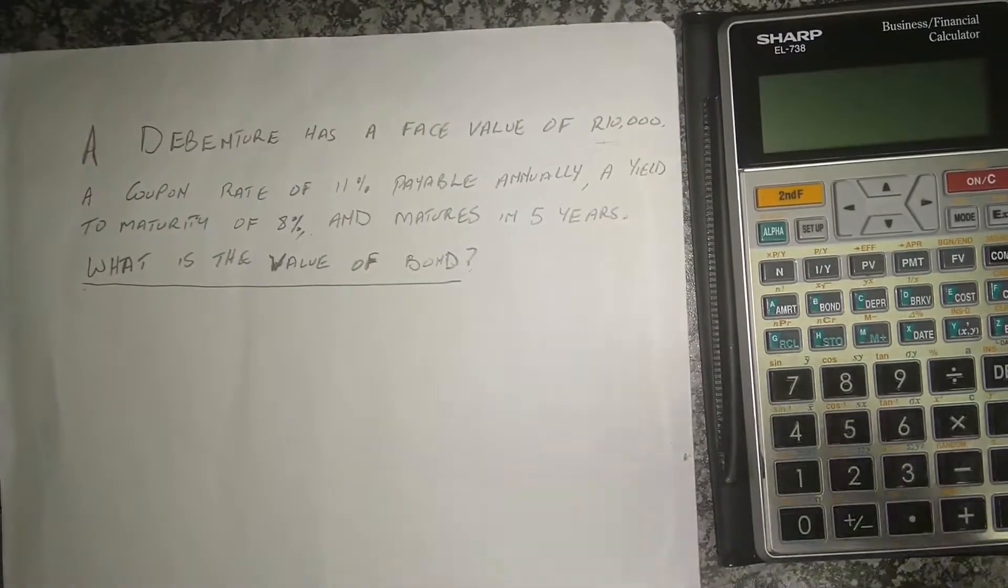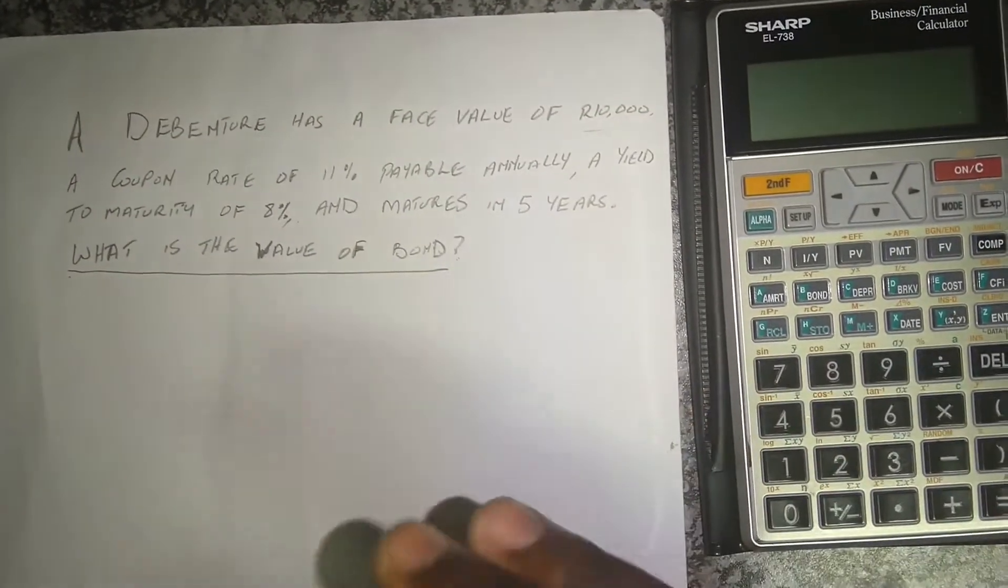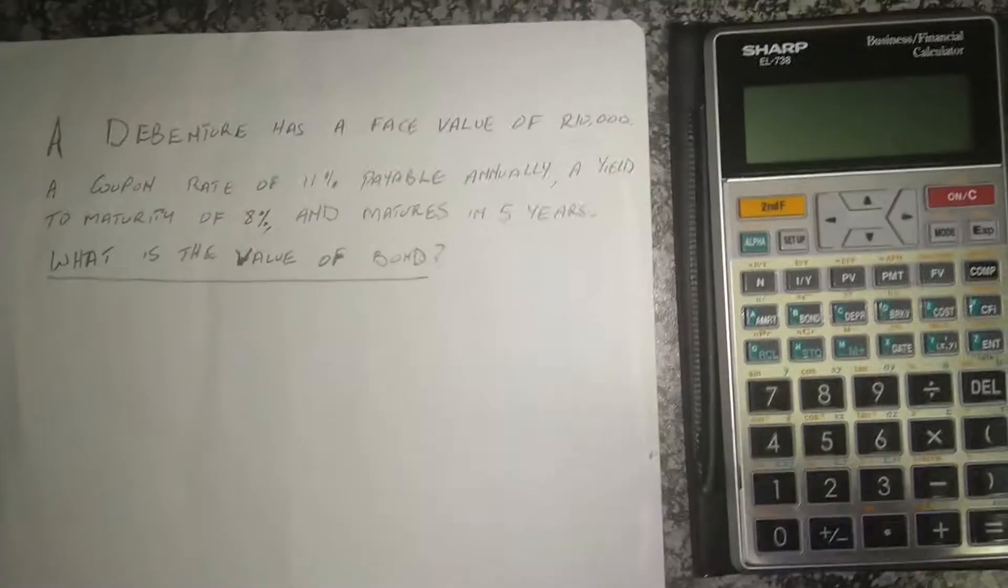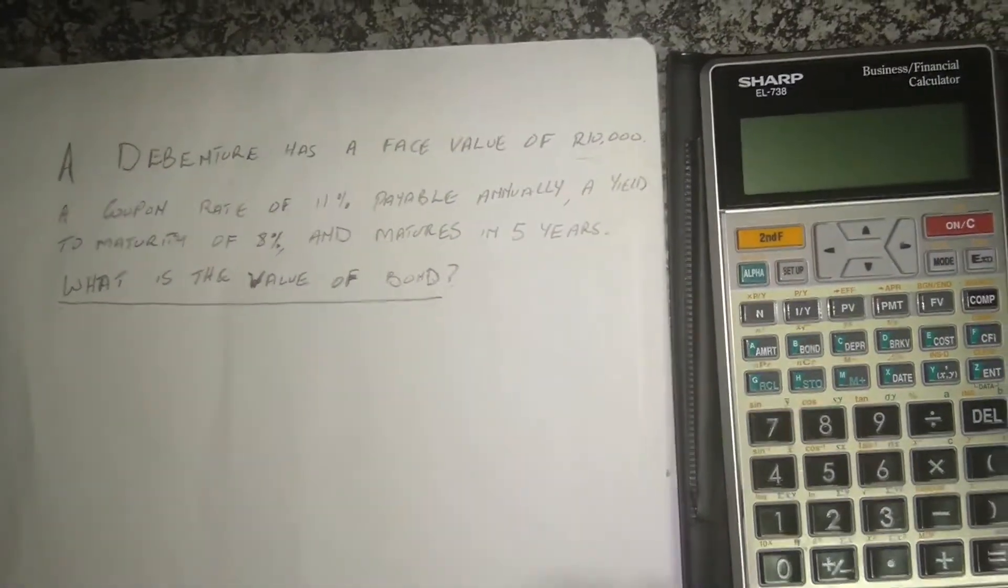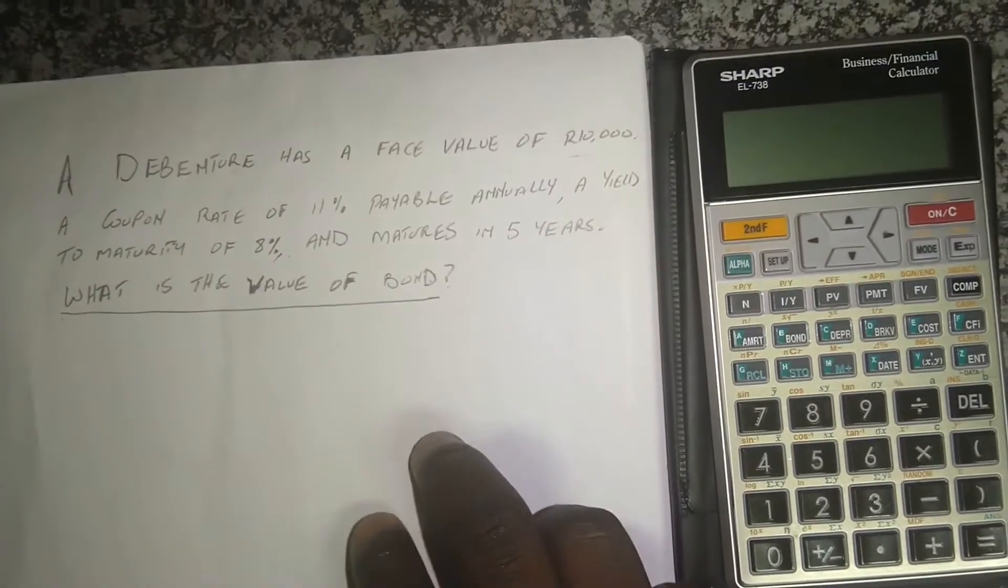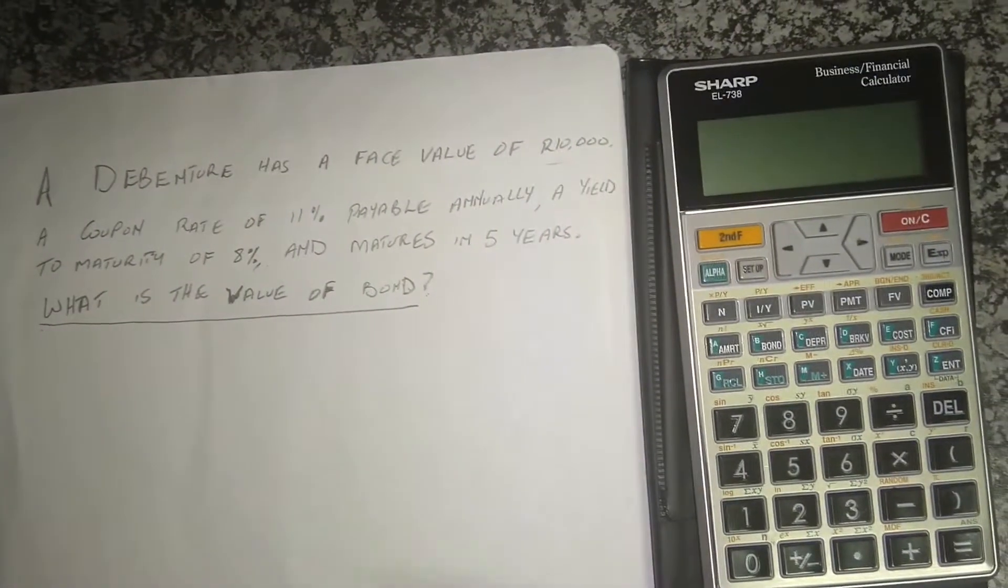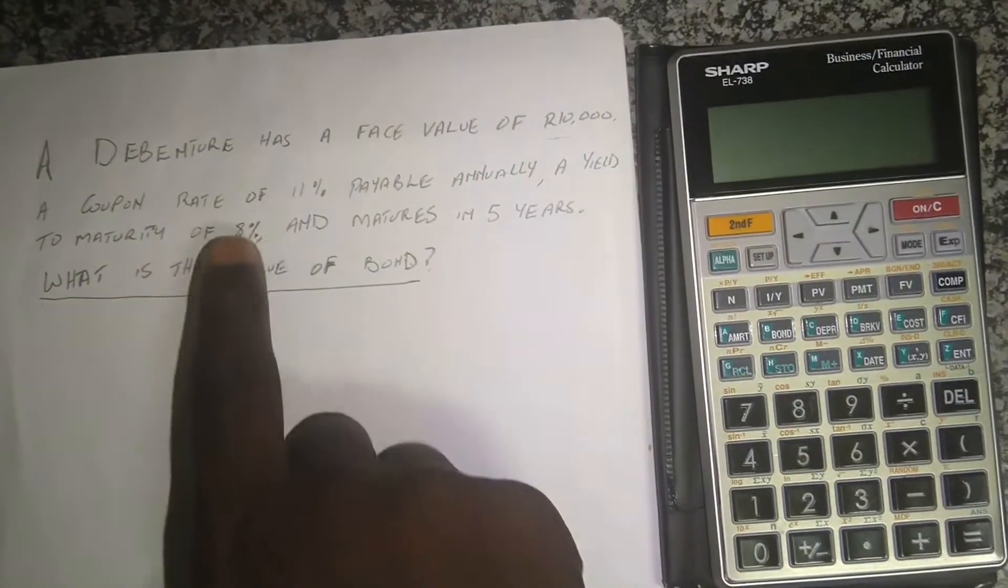Now like I said in the previous lesson we explained what the coupon rate is, what the yield to maturity is and how it applies in this case. But here the first thing that we need to do is to calculate what the recurring interest payment is. Remember the investment in the debenture means that we'll be paying a fixed rate every year and that rate is the coupon rate of 11%.